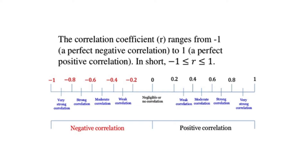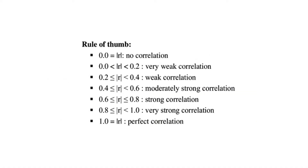The magnitude of the correlation coefficient tells you the strength of the relationship. The closer the correlation coefficient is to 1 or minus 1, the stronger the relationship. A correlation coefficient of 0.5 or minus 0.5 indicates a moderate relationship, while a coefficient of 0.3 or minus 0.3 indicates a weak relationship. Here's the usual rule of thumb for determining the strength of the relationship based on the coefficient.